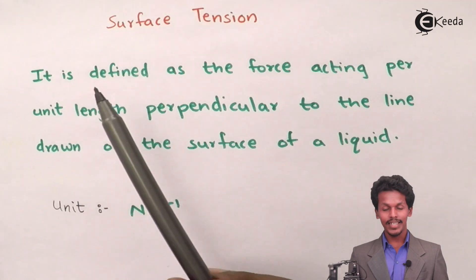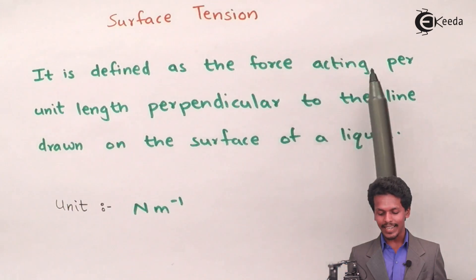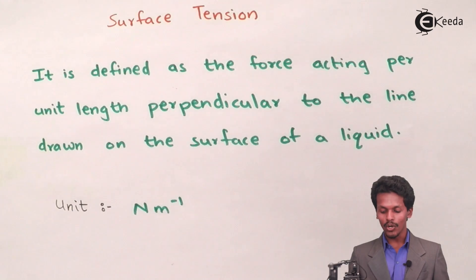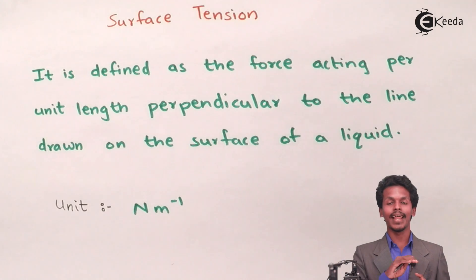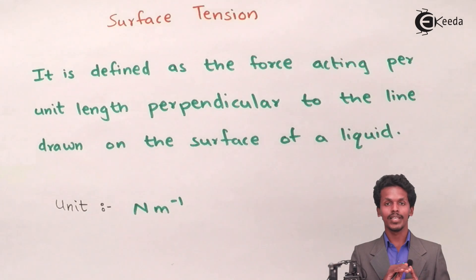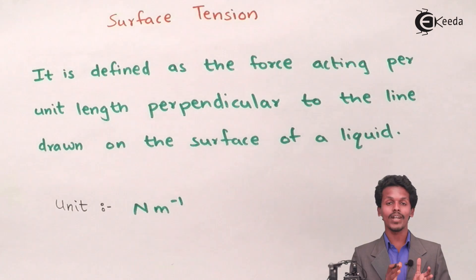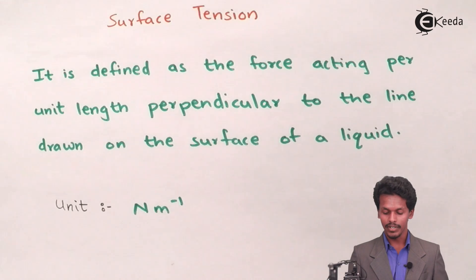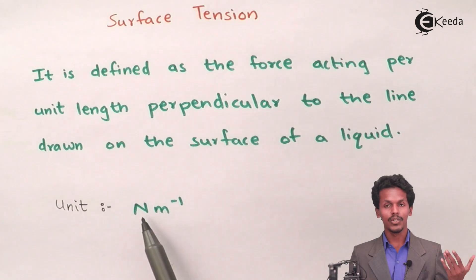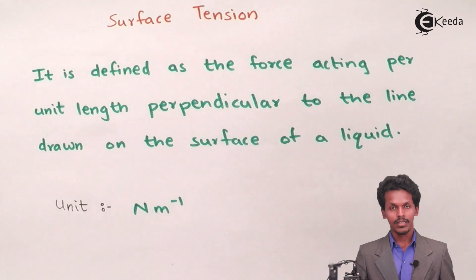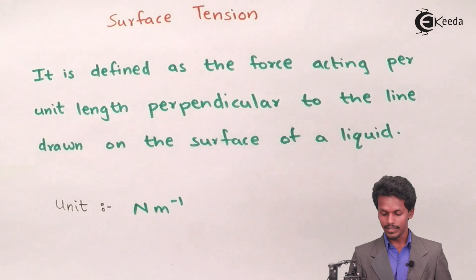Surface tension is defined as a force acting per unit length, perpendicular to the line drawn on the surface of a liquid. Basically it is the force acting on a line drawn perpendicular to the surface of the liquid. The unit of surface tension is Newton per meter, because it is the force acting per unit length.